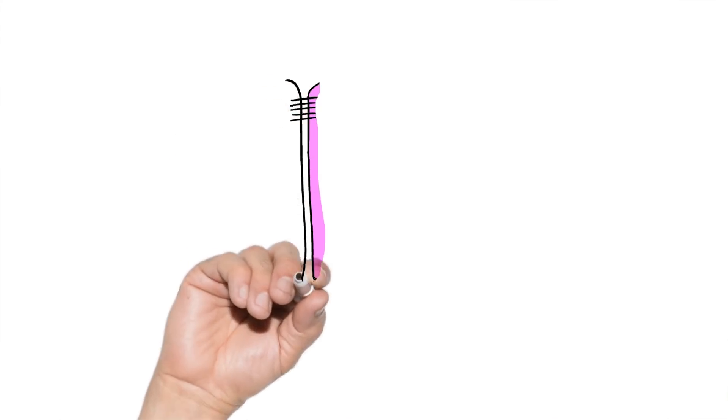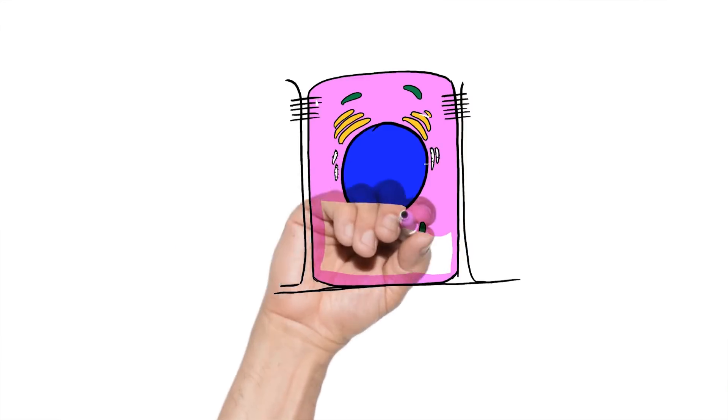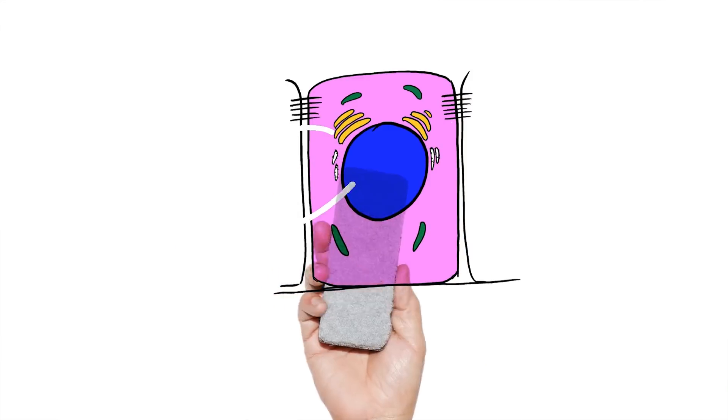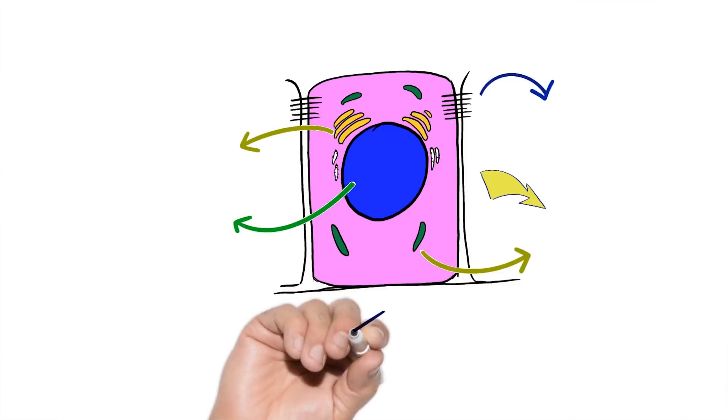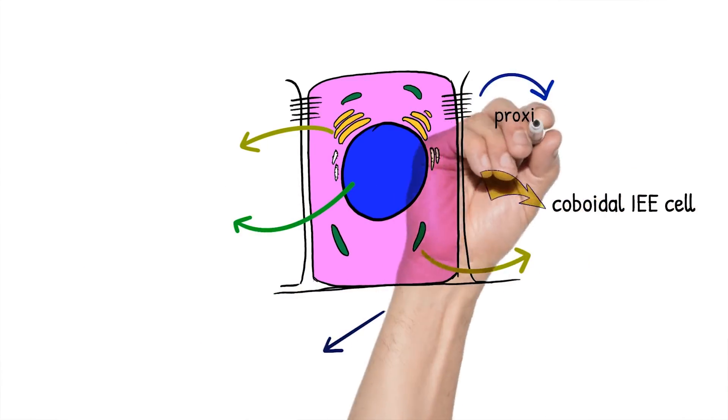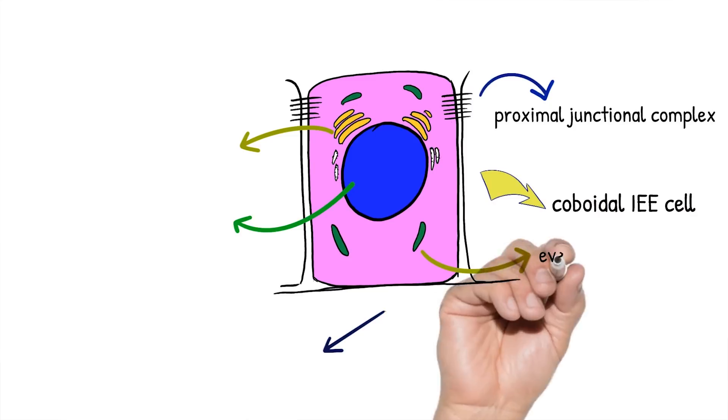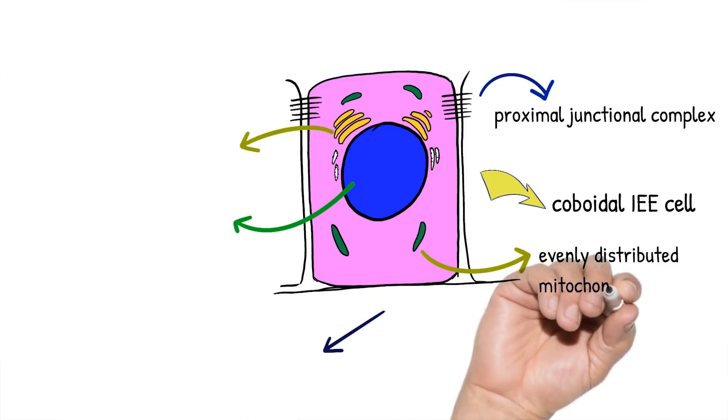Now let us see the life cycle stages of the ameloblasts in detail to better understand the whole process of amelogenesis. In the morphogenetic stage, the cells are low columnar with a large oval centrally placed nucleus that almost entirely fills the cell body. The Golgi complex is located at the proximal end of the cell and the mitochondria are spread out evenly.